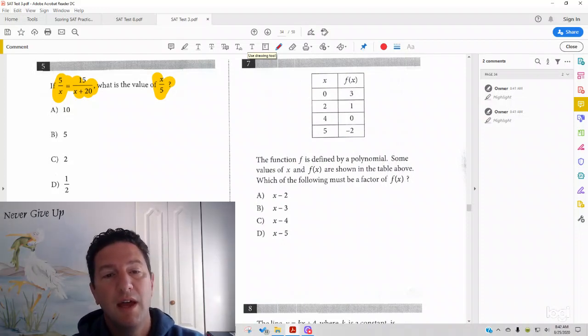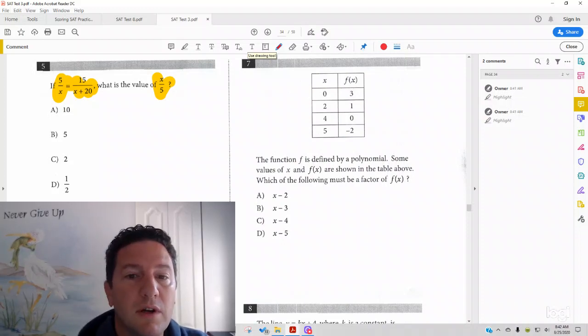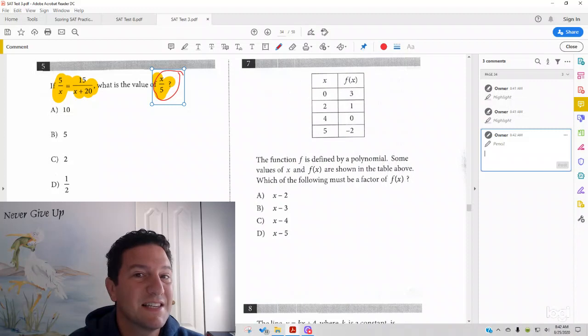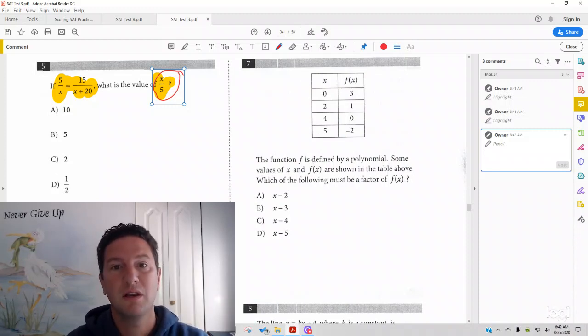If you fall under that category, what you could focus on, notice what this is saying. It's asking for the value of x over 5. What the test makers will do is they'll put the value of x as an answer choice, because half of the students are going to solve for x, because that's what you're taught to do in math class over and over again. So they're going to solve for x and pick an answer. So test makers are going to make that an answer choice. But also, they would have to make x over 5 the correct answer as an answer choice.